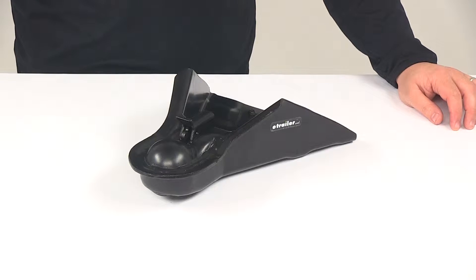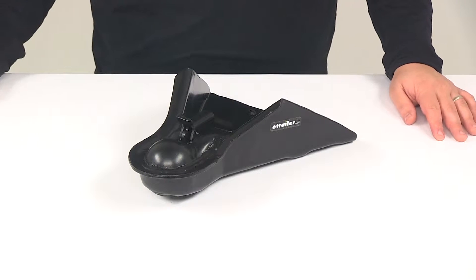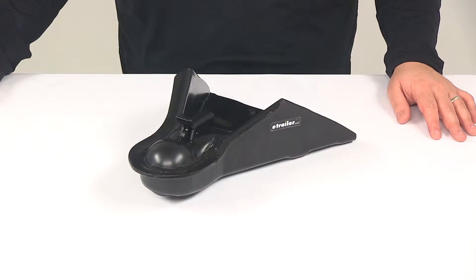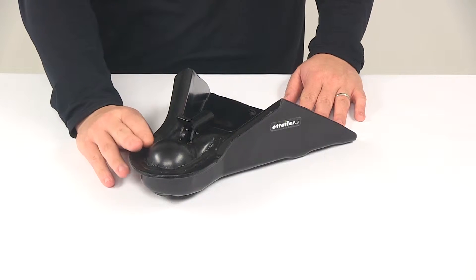Today we're going to be taking a look at an underslung A-frame trailer coupler for a 2 and 5/16 inch hitch ball. The A-frame coupler lets you hook up your trailer to your tow vehicle and provides the connection point for your hitch ball.